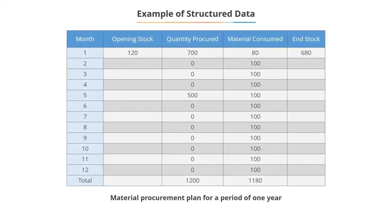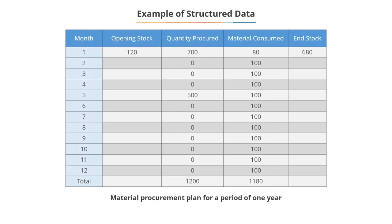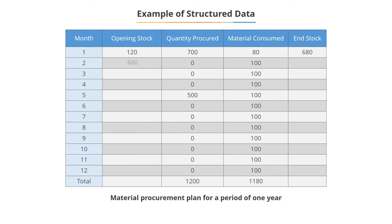Let's understand this with an example. On-screen is a material procurement plan for a certain component for a one-year period. This data is in a structured form. Using Excel, missing values can be obtained. For example, the end stock for month 1 becomes the opening stock for month 2.